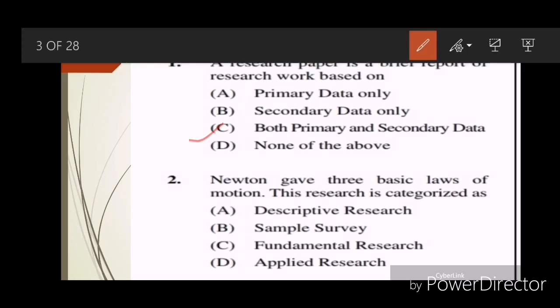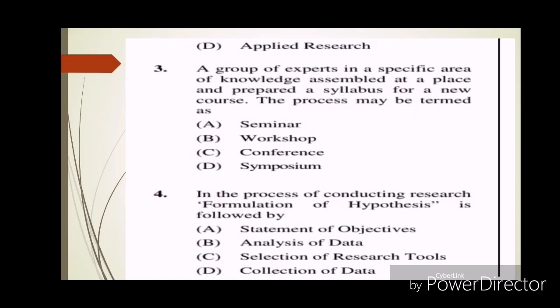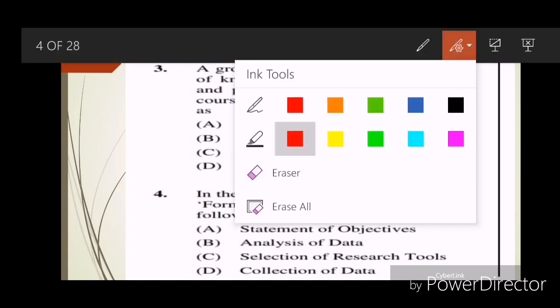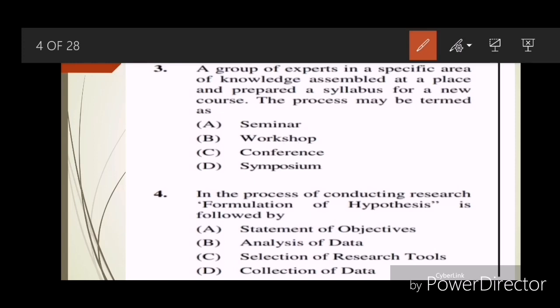Third question: A group of experts in a specific area of knowledge assembled at a place and prepared a syllabus for a new course. The process may be termed as? Answer is B, workshop. Question four: In the process of conducting research, formulation of hypothesis is followed by? Answer is D, collection of data.